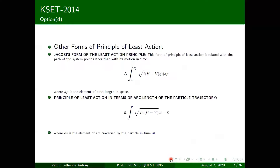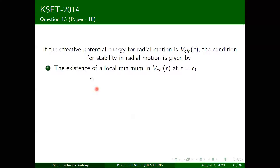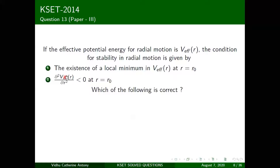Jacobi's form and the arc-length form are essentially the same thing — just different notations. Moving on to the next question: if the effective potential energy for radial motion is V_eff(r), the condition for stability in radial motion is given by the existence of a local minimum of V_eff at r = r₀, and d²V_eff/dr² < 0 at r = r₀.